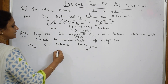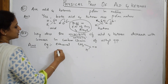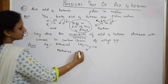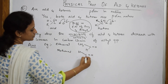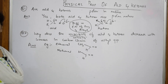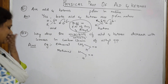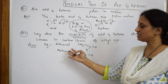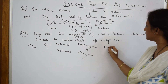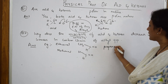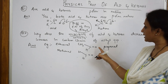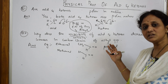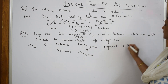Similarly, methanal (HCHO) has no bulky groups and is easily soluble in water. When we go to the next alkyl groups — propanol, butanal, pentanal, hexanal — you are increasing the number of alkyl groups. For example, propanol has the structure CH₃CH₂CHO. As the number of alkyl groups increases, the solubility automatically decreases.